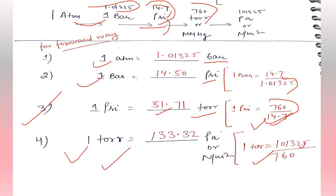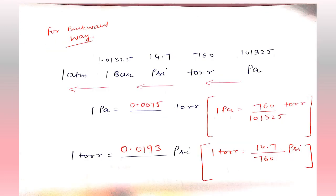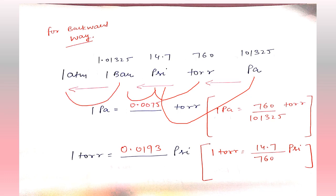Moving on — now we are going in the backward direction: from pascal to torr, torr to psi, psi to bar, and bar to atm.